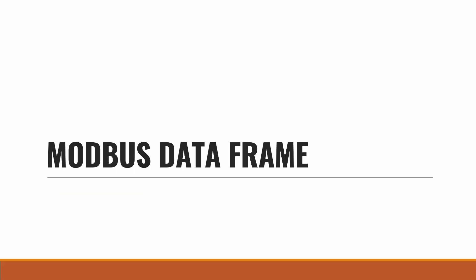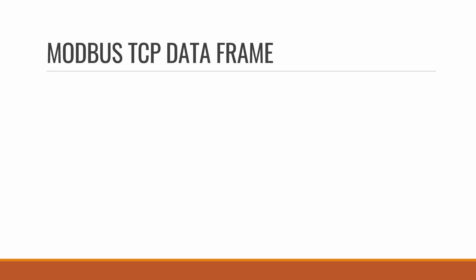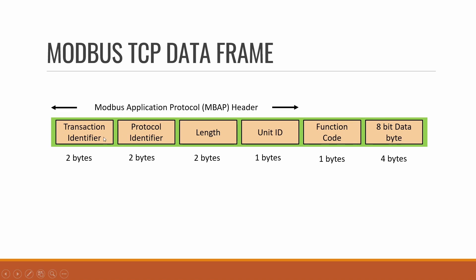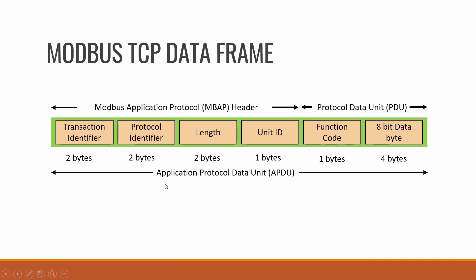Next we will discuss the Modbus data frame. The Modbus TCP data frame consists of: a transaction identifier (2 bytes), a protocol identifier (2 bytes), a length field (2 bytes), a unit ID (1 byte), a function code (1 byte), and 8-bit data (4 bytes). The transaction identifier, protocol identifier, length, and unit ID together form the Modbus Application Protocol Header (MBAP header). The remaining portion — function code and data — is called the Protocol Data Unit (PDU). The entire data frame is called the Application Protocol Data Unit or APDU.